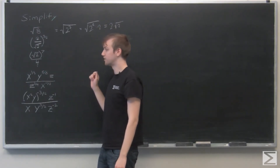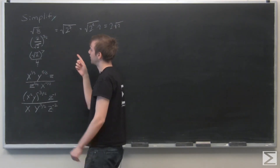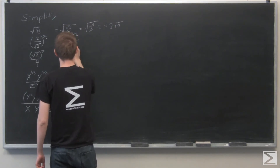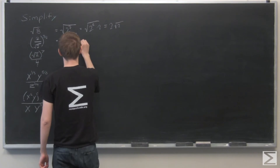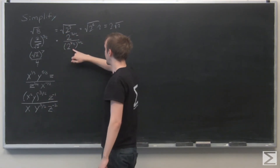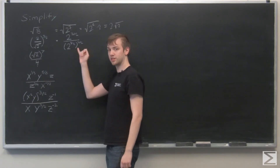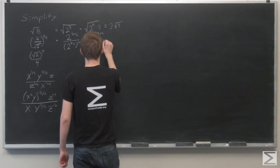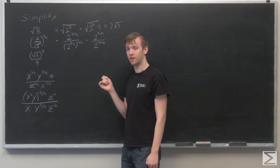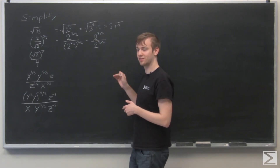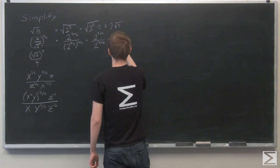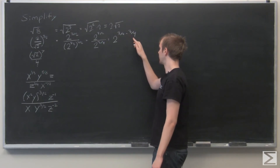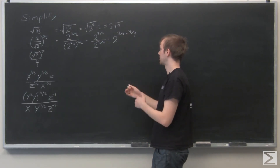Next: 2 over the square root of 2, all to the 3 halves. Start by distributing the 3 halves and writing it as a fraction: 2 to the 3 halves over 2 to the one half, raised to the 3 halves. Multiplying the exponents gives 2 to the 3 halves over 2 to the 3 fourths. Applying the quotient rule, subtract the exponents: 3 halves minus 3 fourths. Since 3 halves equals 6 fourths, 6 fourths minus 3 fourths is 3 fourths. The answer is 2 to the 3 fourths.